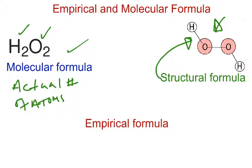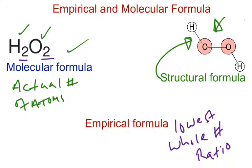Now the empirical formula represents the lowest whole number ratio of the compound. So if you have the actual number being H2O2, and if you reduce that to the lowest whole numbers, you will simply get HO as your empirical formula. So once again, structural is actual arrangement. Molecular is actual number of atoms in the compound. Empirical is the lowest whole number reduced form.